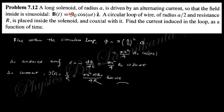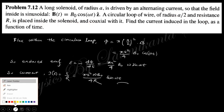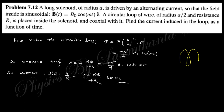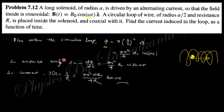Next: a long solenoid of radius A is driven by an alternating current such that the field oscillates. A circular loop of radius A/2 with resistance R is placed inside the solenoid. Find the current induced in the loop. The flux through the loop is Φ = π(A/2)²·B. The induced EMF is ε = −dΦ/dt. Substituting and differentiating gives the EMF, and the current is EMF divided by resistance R.